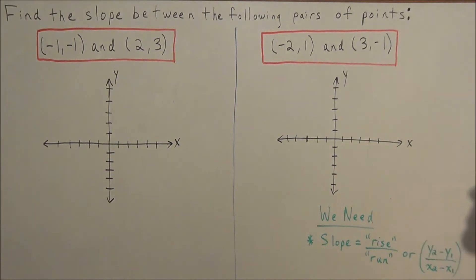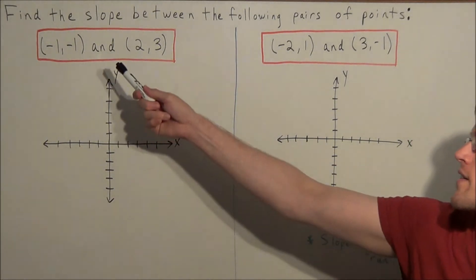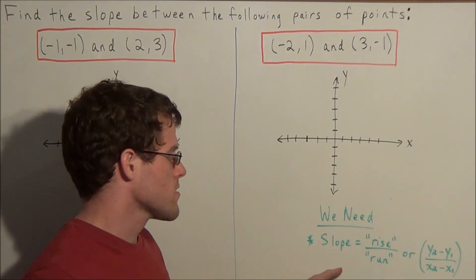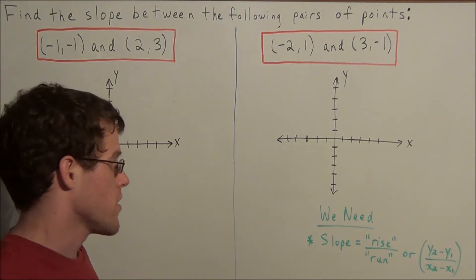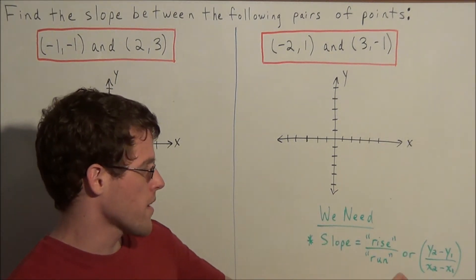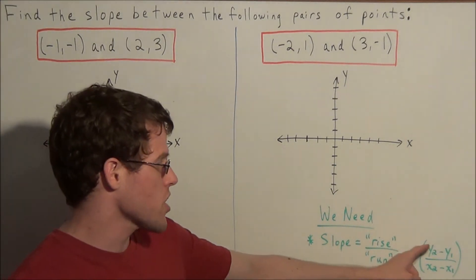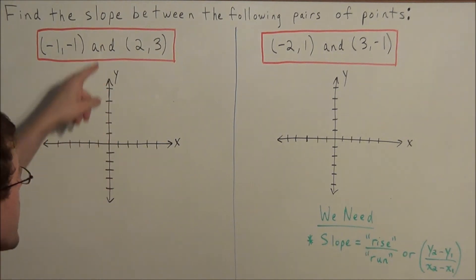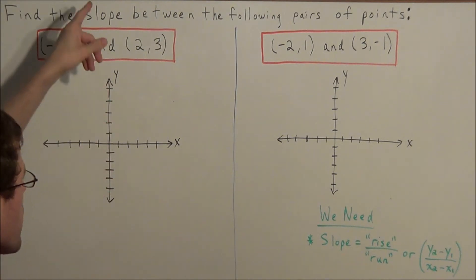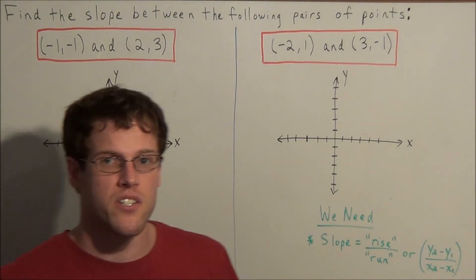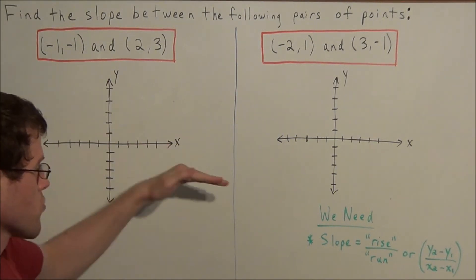So we have a problem finding the slope between the following pairs of points. We're going to use the interpretation that slope is equal to the rise over run. The formula for slope is y2 minus y1 divided by x2 minus x1. Notice how the change in the y-coordinates corresponds to a rise — we're rising up and down in a vertical direction — while the run corresponds to a change in the x-coordinates, which is a horizontal run.